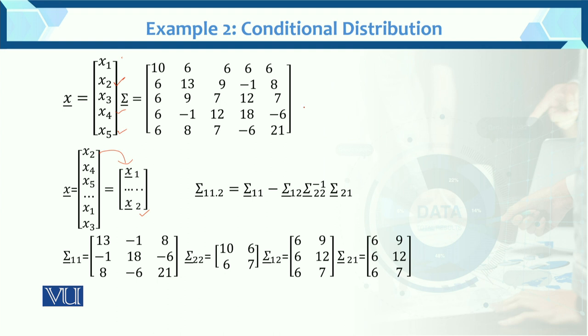Now look at this. How will we arrange this data? How will we arrange this variance-covariance matrix? First, we know that the first is Σ11. So Σ11 equals x2, x2. So the first value will be x2, x2. It means second row, second column, 13.